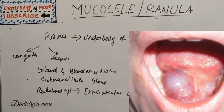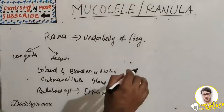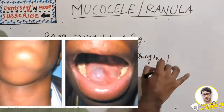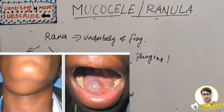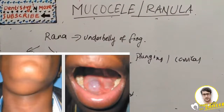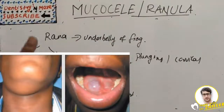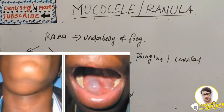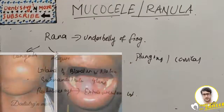If very large, it can affect both breathing and swallowing. There is a different variety called the plunging or cervical ranula, which occurs when the spilled mucin dissects through the mylohyoid muscle and produces swelling in the neck. Extravasation of mucus occurs behind the confines of the floor of the mouth, through the mylohyoid muscle, into the upper neck or submental region. It presents as a soft, cross-fluctuant, non-tender, dumbbell-shaped swelling in the submandibular region and can be bi-digitally palpable.